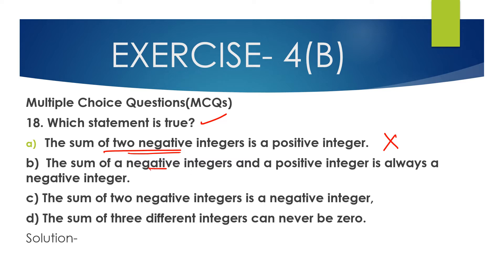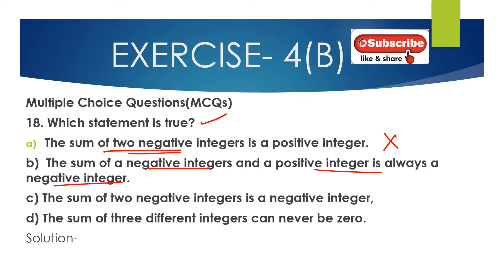Option B: the sum of a negative integer and a positive integer is always a negative integer. This is also false. It depends on the bigger integer — if the bigger integer has a positive sign, the result is positive; if the bigger integer has a negative sign, the result is negative.